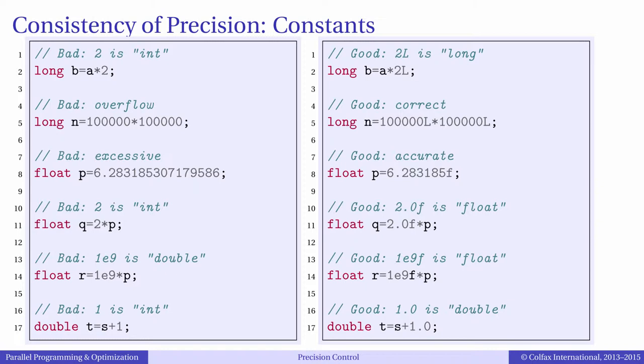For example, the value of 100,000 times 100,000 is too large to represent with a 32-bit integer. So, in this operation we will have an integer overflow, which produces an incorrect result. The correct result can be obtained by using the suffix L.